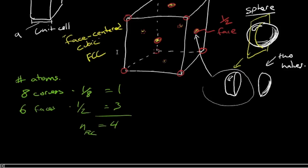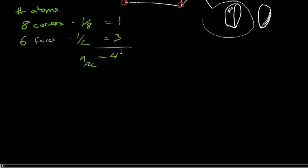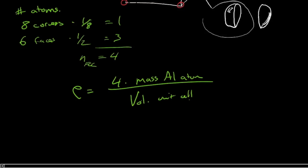So that's fantastic. We actually know that there's four atoms inside. So we're well on our way here to working out the density. So we'd say then, the density is going to be equal to four times the mass of an aluminum atom, and then divided by the volume of the unit cell. So we're almost there.